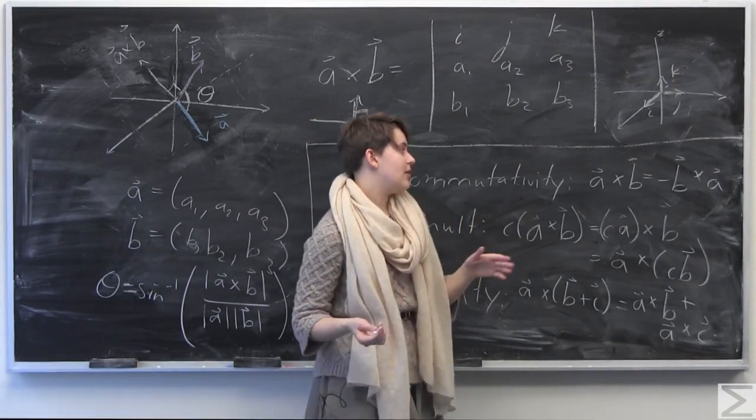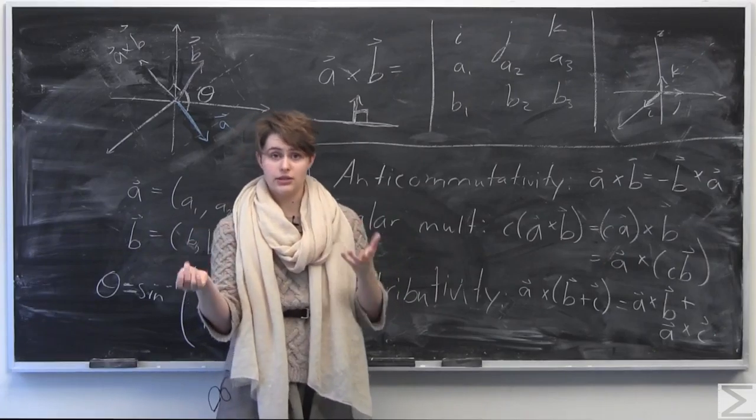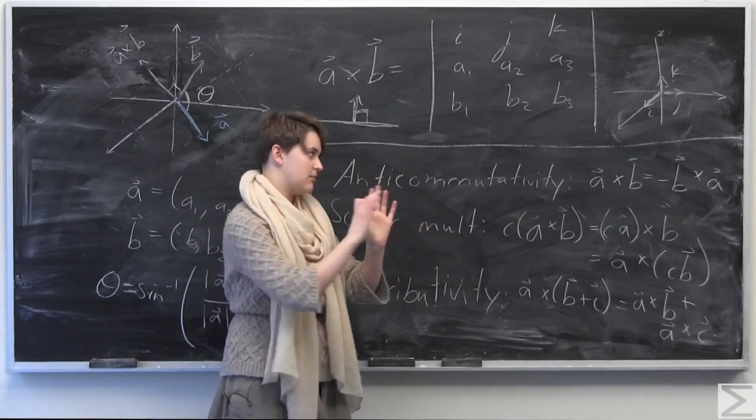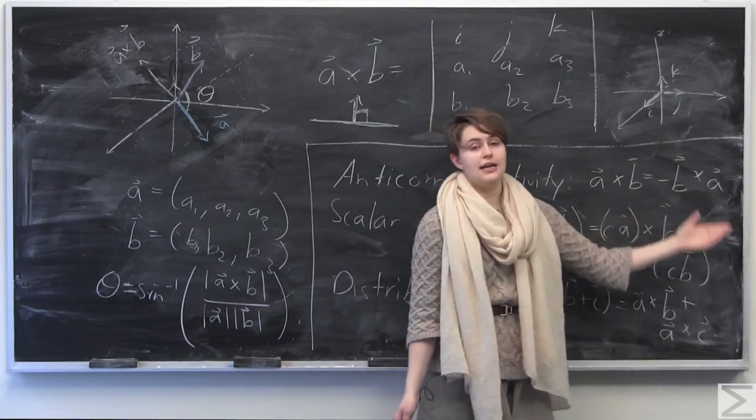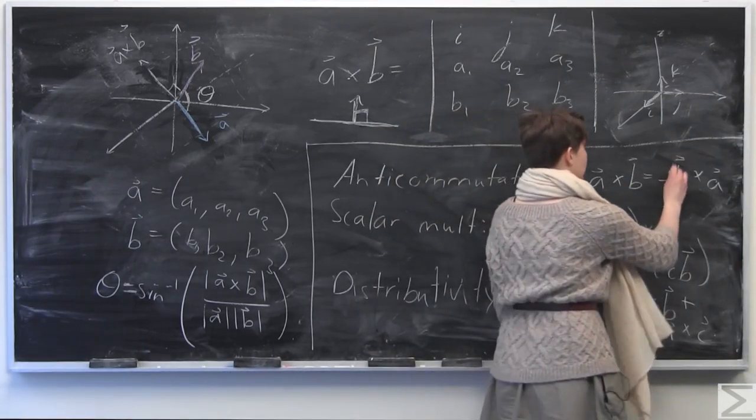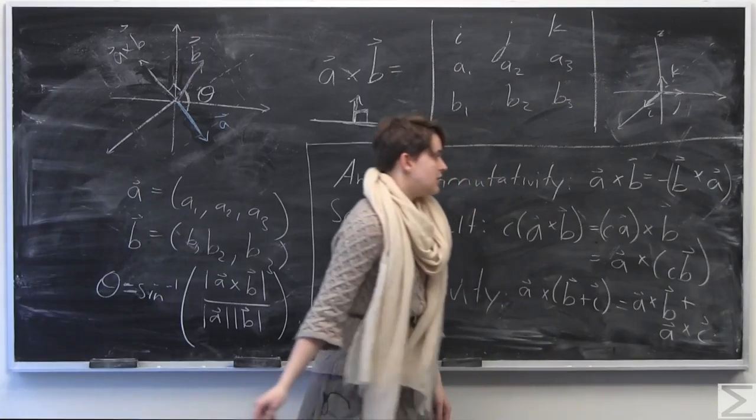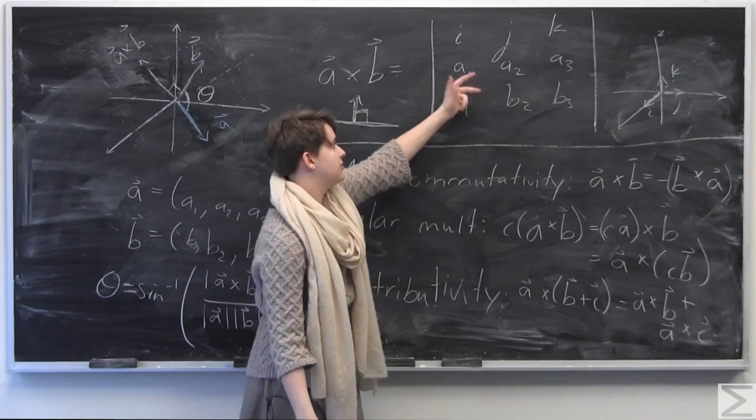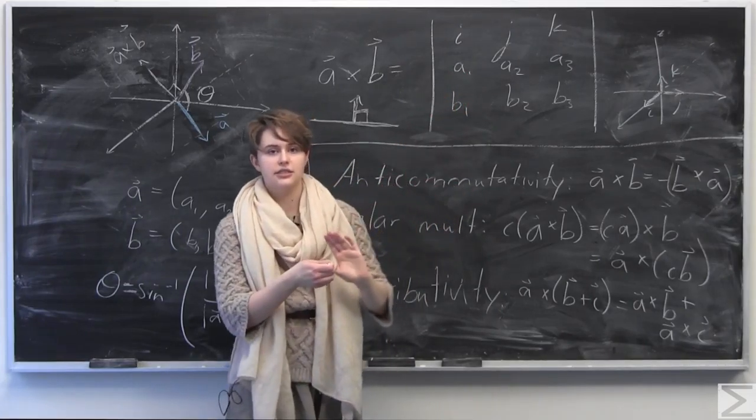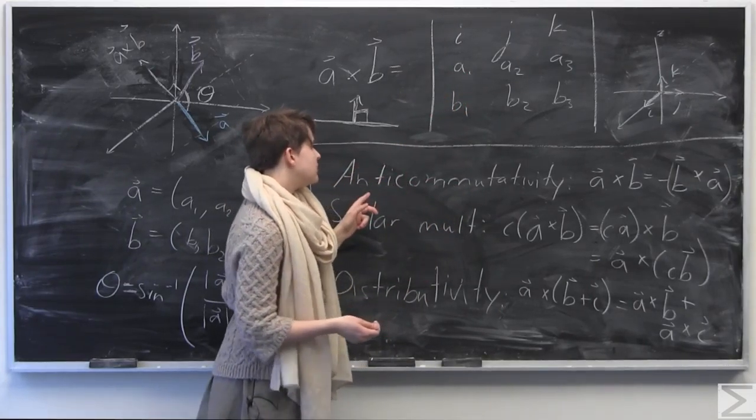So there's a couple properties of the cross product that are very important to know. And possibly the most important is the anti-commutativity property, which means that instead of having, for example, a dot b is equal to b dot a, very nice, kind of symmetric there, we have the opposite here, where we have a cross b is equal to negative b cross a, or negative quantity b cross a here.